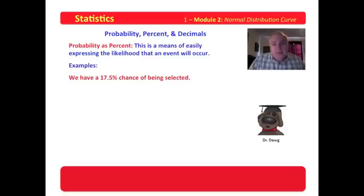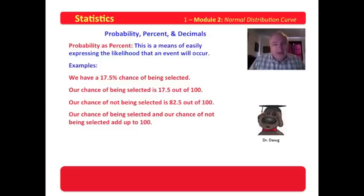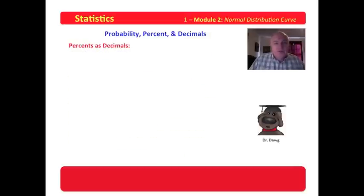Probability as percent. Some other examples expressed as the likelihood that an event will occur. We have a 17.5% chance of being selected. Our chance of being selected is 17.5 out of 100. Our chance of not being selected is 82.5 out of 100. Our chance of being selected and our chance of not being selected add up to 100. So we have a 100% chance that one or the other is going to occur. Probabilities are actually quite easy.